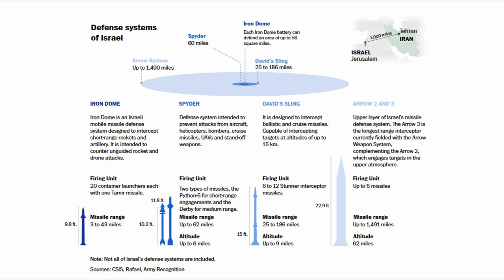It's a portable system towed by trucks. Each of its 10 batteries can protect a 58 square mile area. There are other elements of the Iron Dome visible in the picture. David's Sling is a defense against short-range ballistic missiles, large caliber rockets, and cruise missiles. And Arrow 3 is a defense against medium-range ballistic missiles.